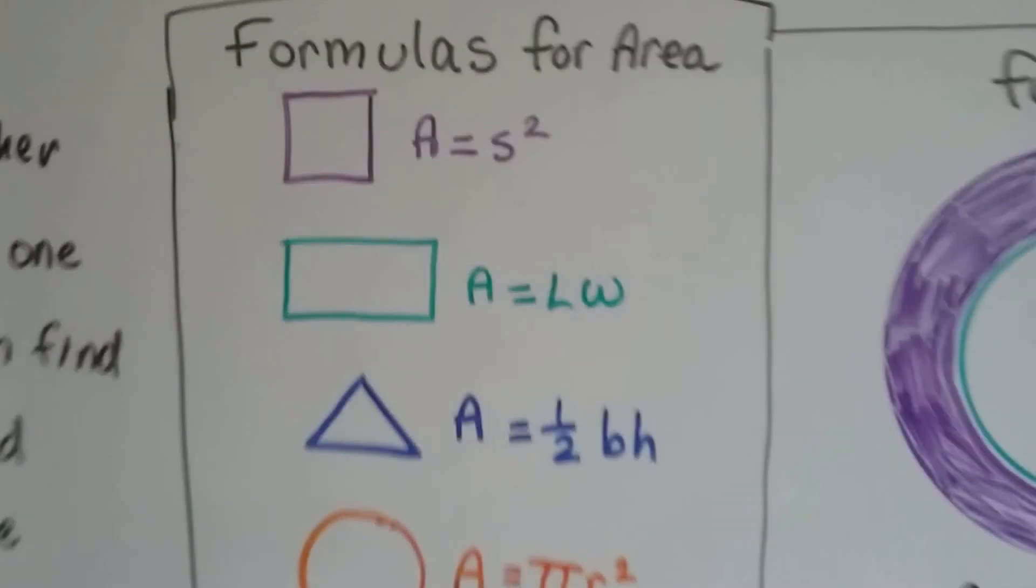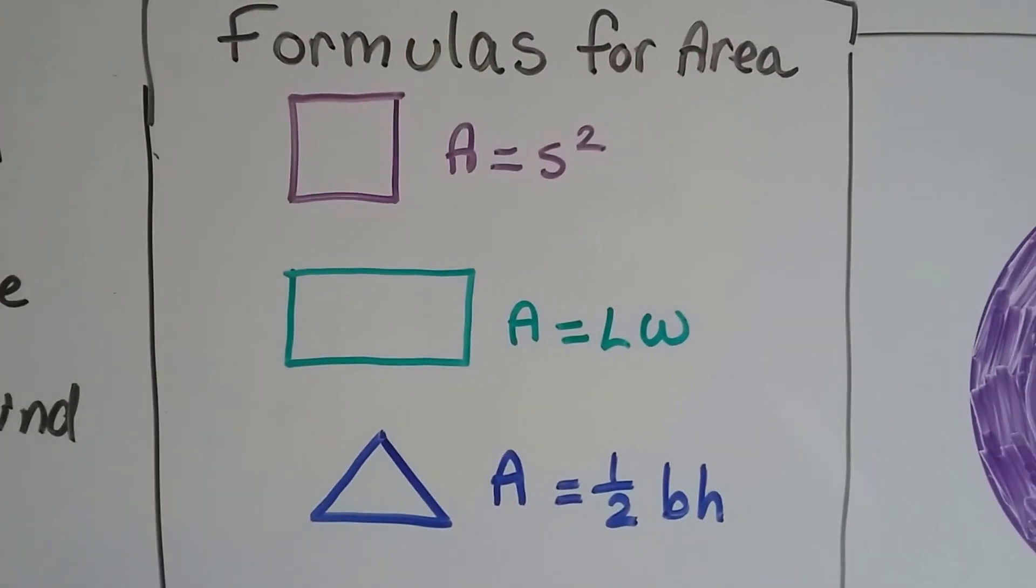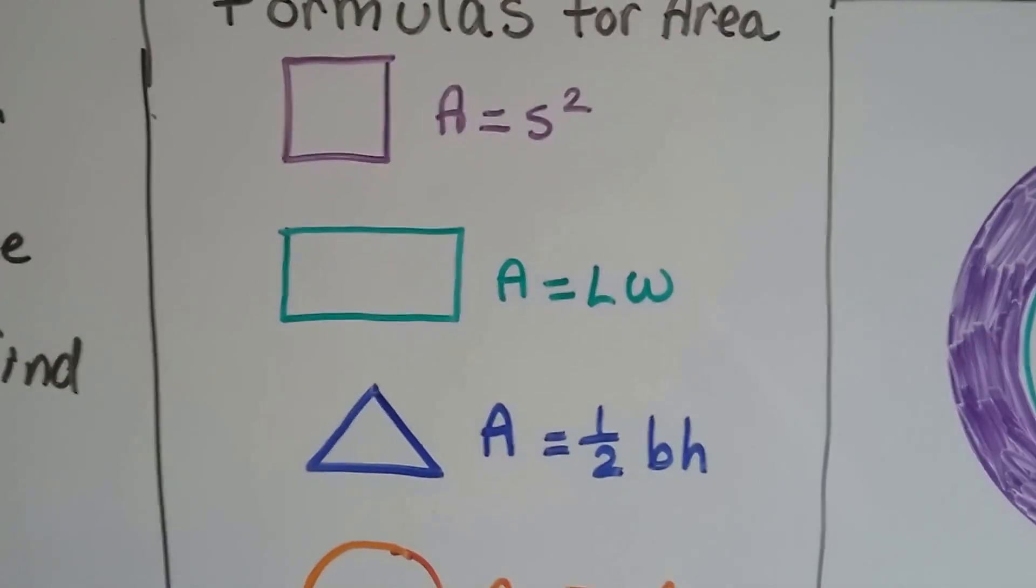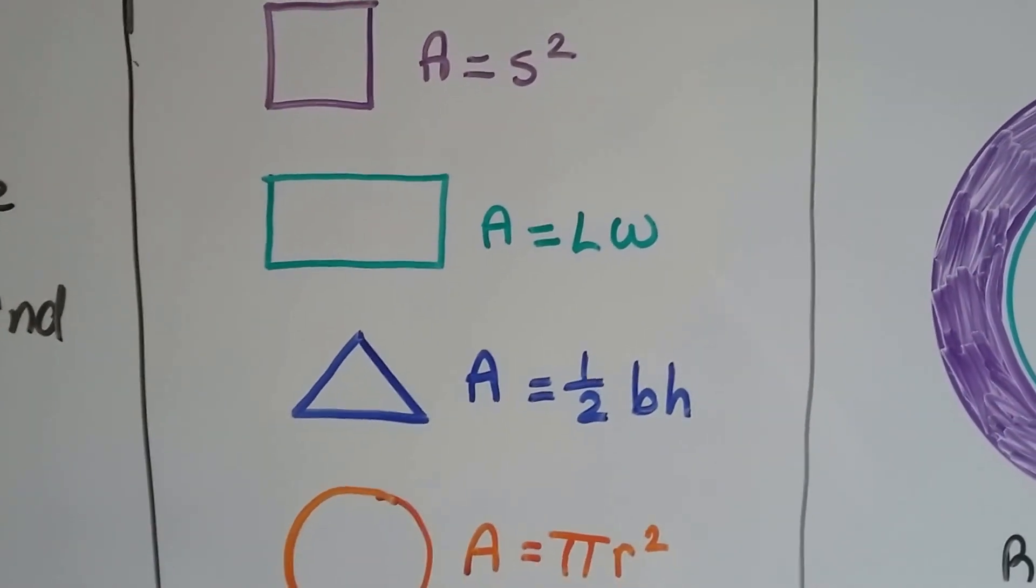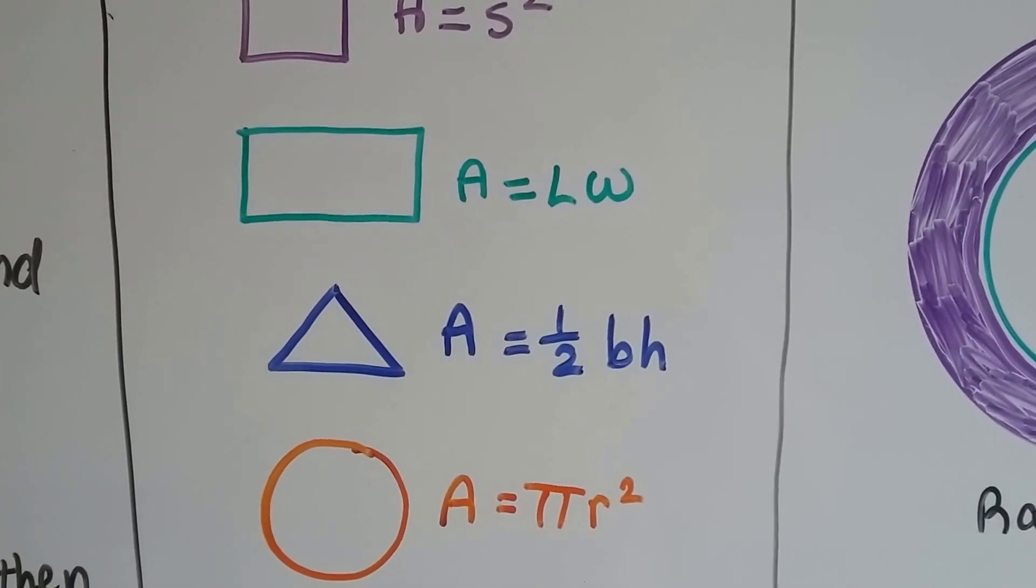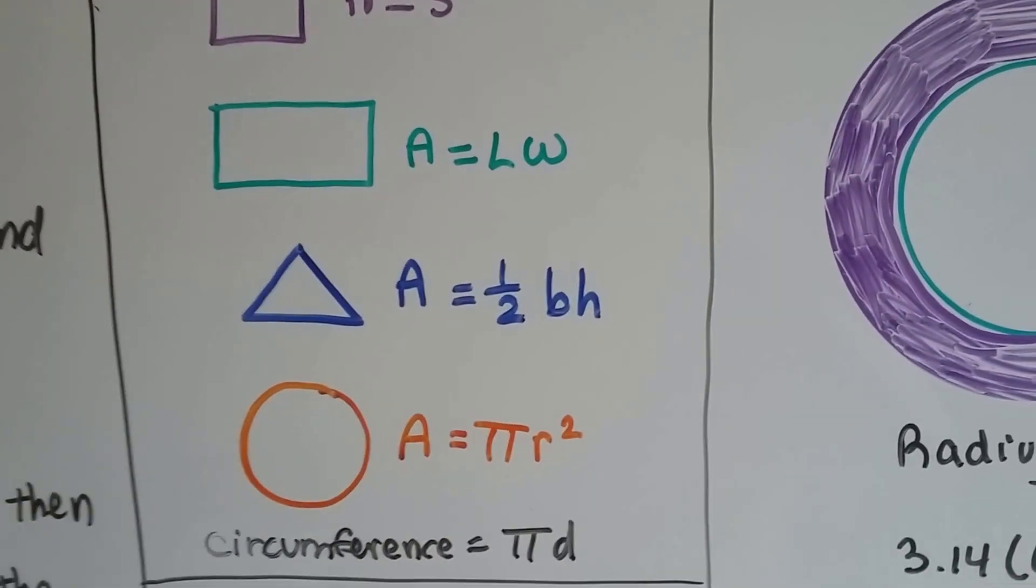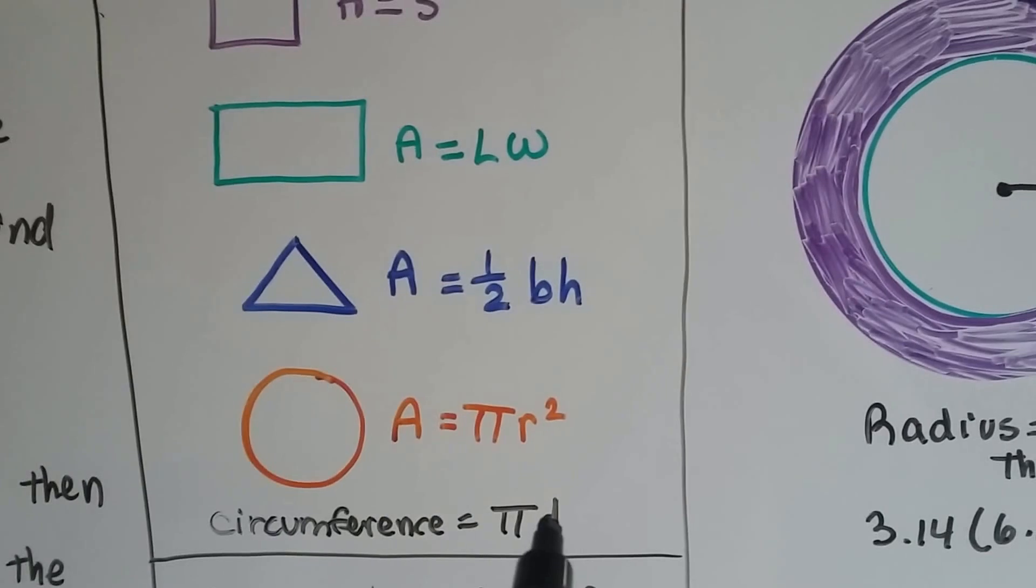The formulas for area for a square is A equals side times side. For the rectangle, it's length times width. For a triangle, it's half times the base times the height. And for a circle, it's pi times the radius times the radius. And remember, the formula for circumference is pi times the diameter.